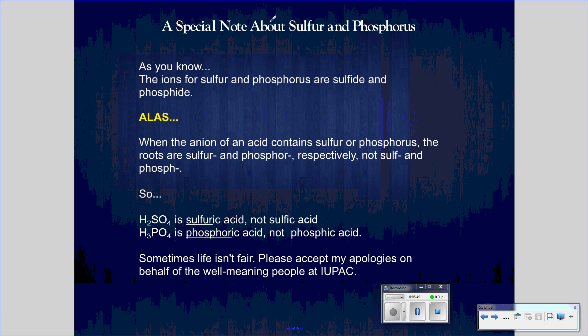Special notes about sulfur and phosphorus. Now, we've already dealt with this a little bit before. We're going to deal with it again, and it will be a topic for the rest of your chemistry lives. You'll always note this strangeness. But let's put it out there so you're clear with it. As you know, the ions for sulfur and phosphorus are sulfide and phosphide. Alas. When the anion of acid contains sulfur or phosphorus, the roots are sulfur and phosphor, not sulf and phosph. So, note that there's a difference between when you make the ion, just that single ion for sulfide and phosphide, we just use that S-U-L-F and the P-H-O-S-P-H. But when we're working with the acid version, we are going to use the full sulfur and phosphor.